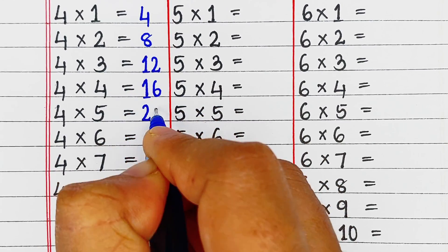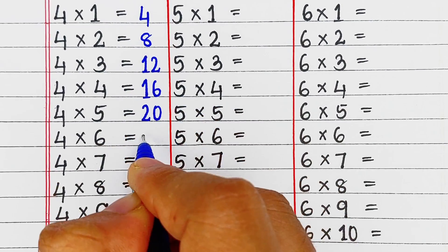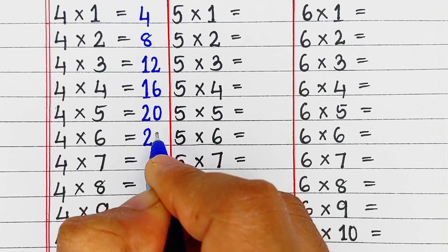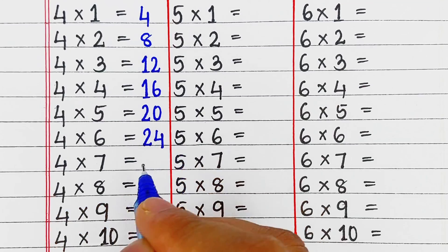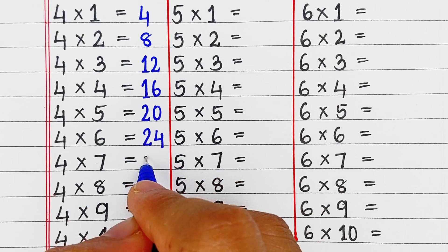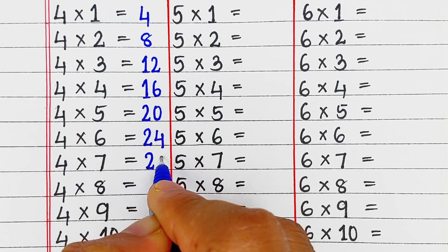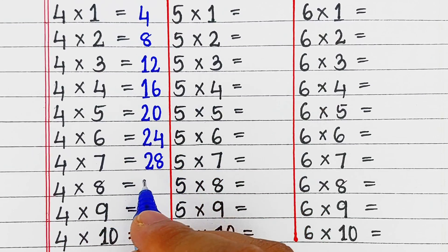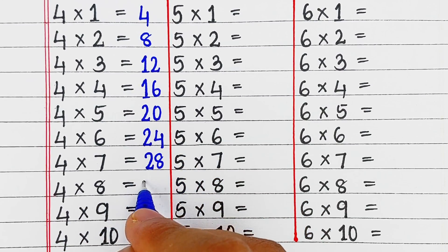Next is table of 4. 4 ones are 4, 4 twos are 8, 4 threes are 12, 4 fours are 16, 4 fives are 20, 4 sixes are 24, 4 sevens are 28, 4 eights are 32.